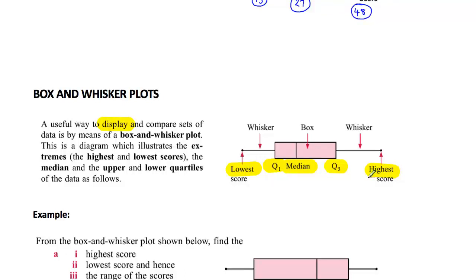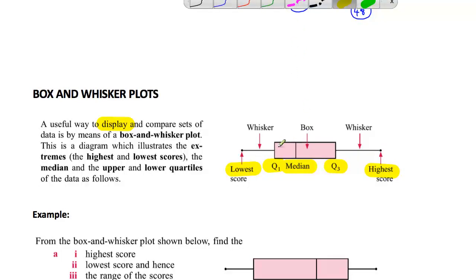And this section in here, that part of it, because it's between the first and the third quartile, that section there makes up 50% of the scores. Remember because 25% lie down here below the first quartile, 25% lie above. So the middle 50% are in here.